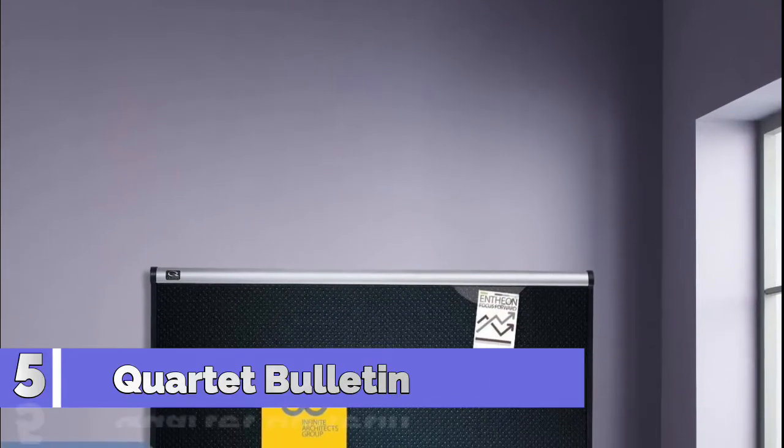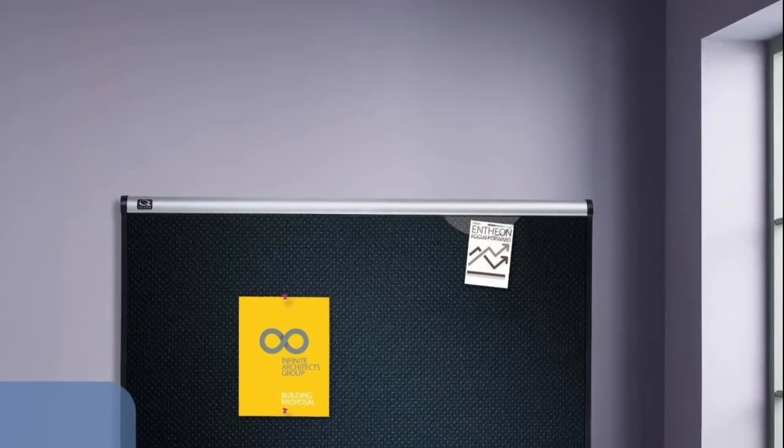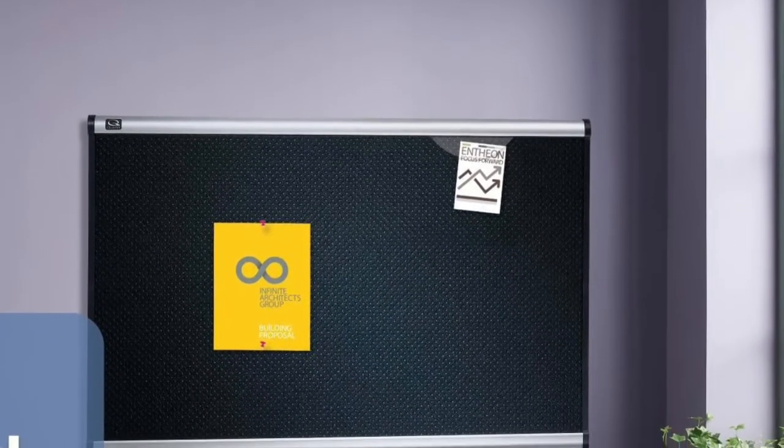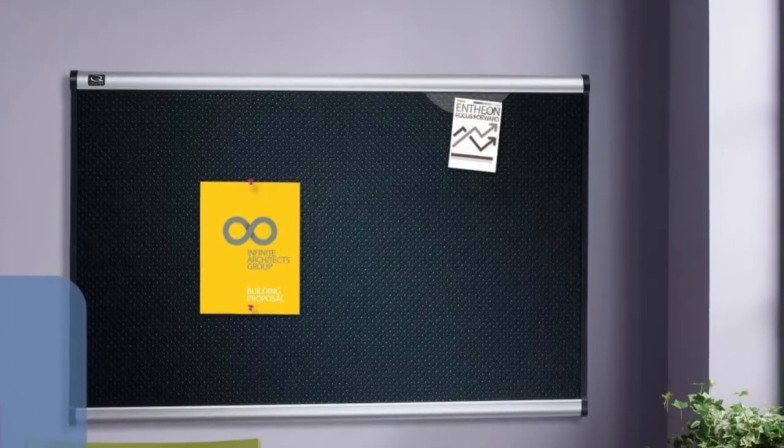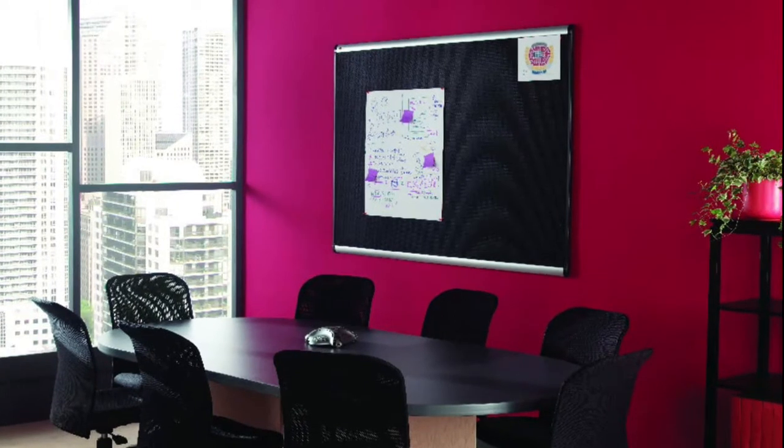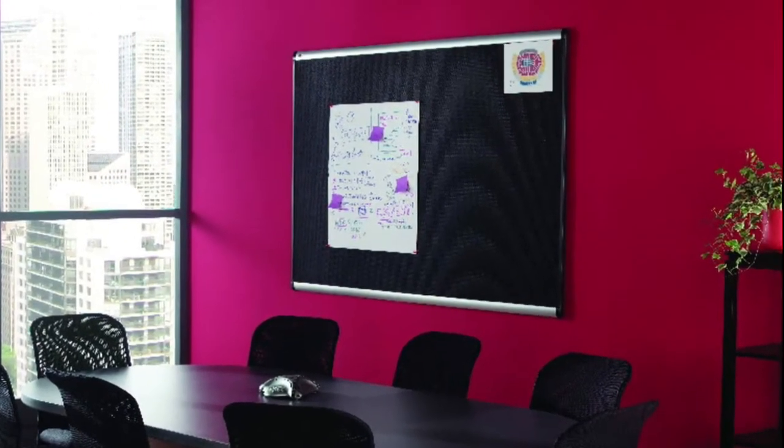Number 5, Quartet Bulletin Board. Durable embossed black foam bulletin board backed by high-density fiberboard secures documents with push pins. Frequent use delivers quality performance in normal office environments. Self-healing foam surface eliminates unsightly pinholes and high-density backing ensures documents stay securely posted.